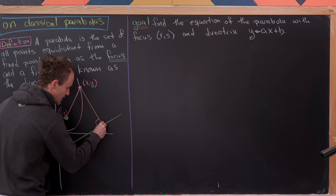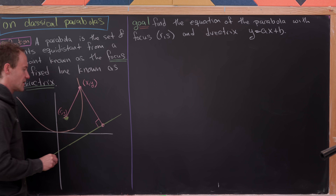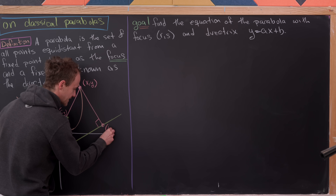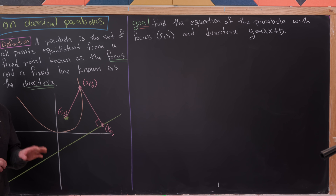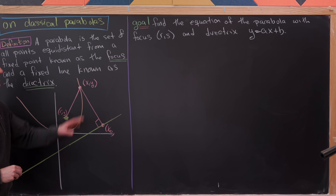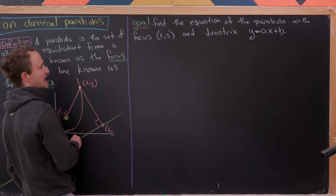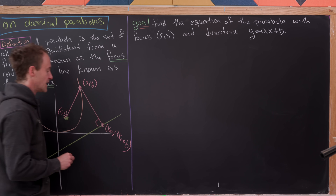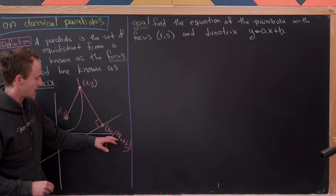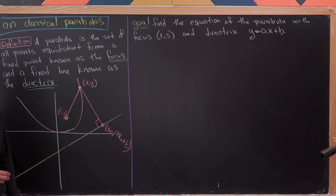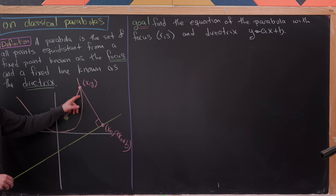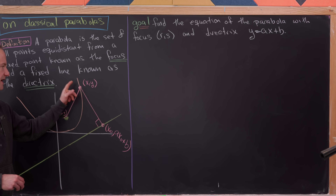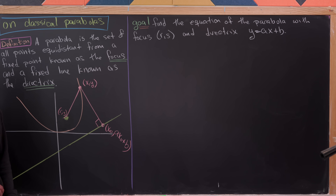We put the foot of the perpendicular on the line and call its x-coordinate x-naught. Since it lies on the line y equals ax plus b, its y-coordinate is ax-naught plus b. The value of x-naught depends on (x, y): wherever we move (x, y) along the parabola, that creates a different line segment intersecting our directrix perpendicularly.